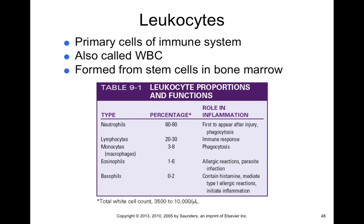When monocytes encounter infected or inflamed tissue, they activate into macrophages, enter that tissue, and participate in phagocytosis. Macrophages are part of your innate immune response. Eosinophils, making up 1–6% of immune cells, are involved in allergic reactions and parasitic infections. There's an interesting hypothesis that overactive eosinophils play a role in excessive allergy and even autoimmune responses, and that parasites might possibly be used to treat autoimmune disease.